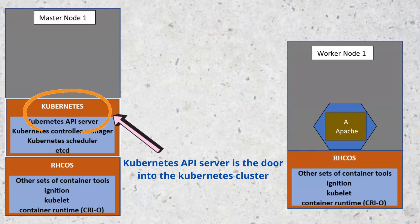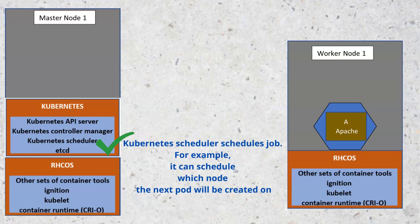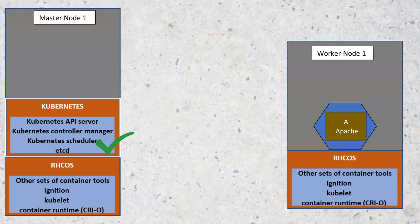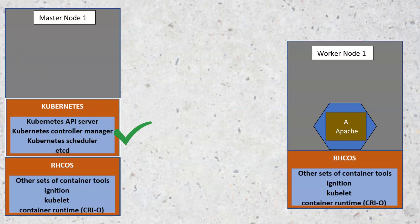The Kubernetes scheduler is very intelligent — it schedules which node a cluster component, for instance a pod, will be created on. It knows the right node to schedule pods on and does this automatically by default. The etcd is like the brain power of the cluster — every cluster operation, apart from workload operations, is stored in etcd as logs in YAML format. The controller manager is responsible for controlling the Kubernetes operations in the cluster. It watches etcd for any changes and knows what the desired state of the cluster should look like.